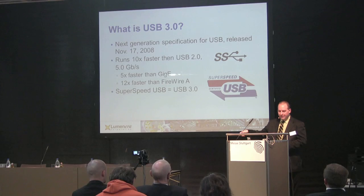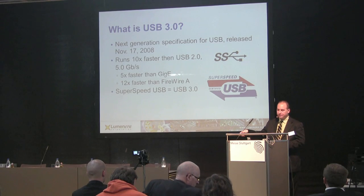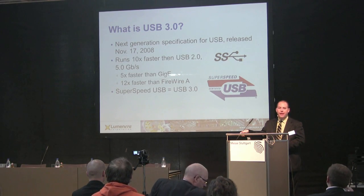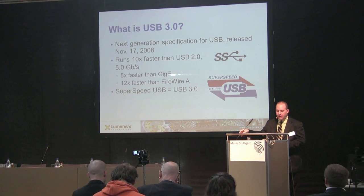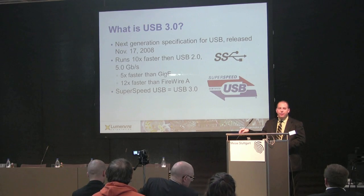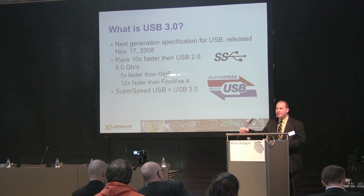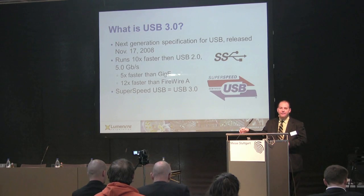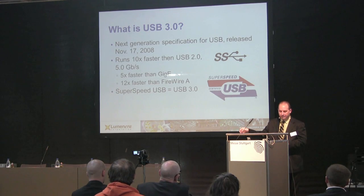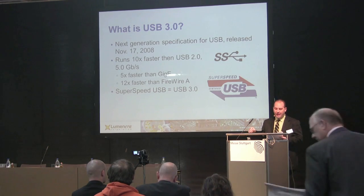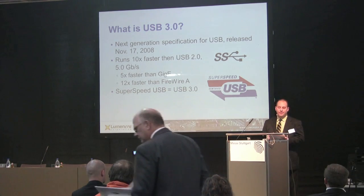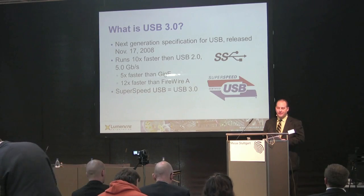USB 3.0 is a next-generation USB specification. It is fully backwards compatible with both USB 2.0 and USB 1.0. Products designed against the specification are called SuperSpeed USB devices. SuperSpeed products run at 5 gigabits per second, which is 10 times faster than USB 2.0, 5 times faster than GigE, and 12 times faster than FireWire A. On the right side of this slide you'll see the two specification logos that denote products certified against the USB 3.0 specification.